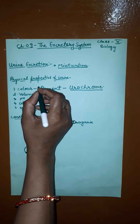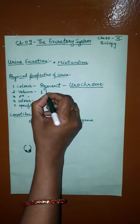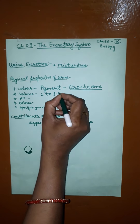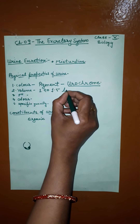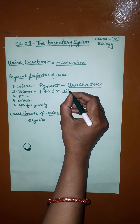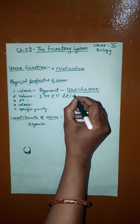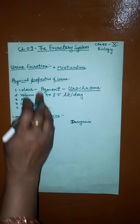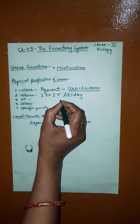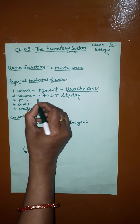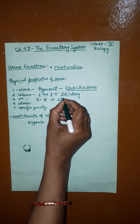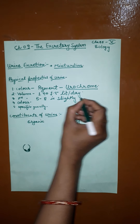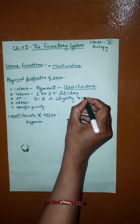The volume of urine depends upon the person and lifestyle. It is 1 to 1.5 liters per day, but varies person to person. The pH is usually slightly acidic, ranging from 5 to 8.